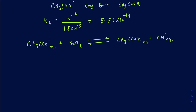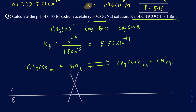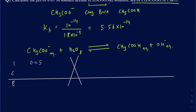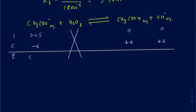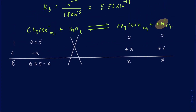Now it's time to make an ICE table. We ignore the water. We're starting out with 0.05 molar acetate, and we don't have any products in the beginning. We lose X amount of reactant and make X amount on the product side. At equilibrium we have 0.05 minus X for the reactants, and both products are X. Note that this X represents OH⁻ in this case, not H⁺ — so you're not directly getting the H⁺ concentration here, but rather the OH⁻ concentration. So Kb equals X squared divided by 0.05 minus X.